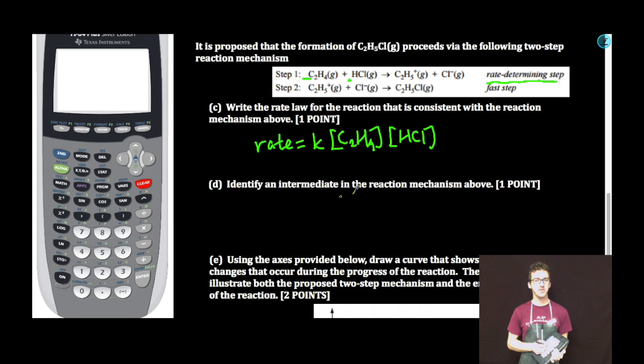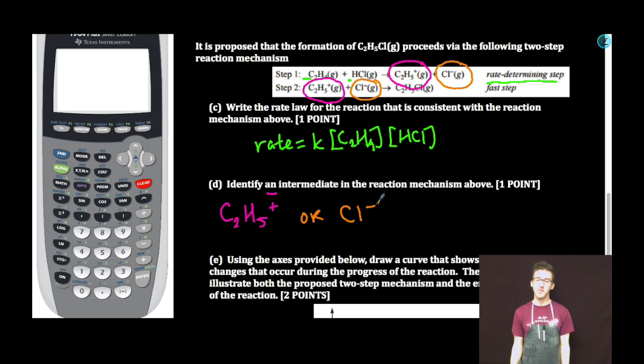Part D. Identify an intermediate in the reaction mechanism above. As I study my mechanism, recall that an intermediate is produced in an early step and consumed in a later step. So we actually have two possible answers here. It says identify an intermediate, which implies just identifying one. I've included both of them here in my answer, but recognize that if you're only asked for one, play it safe and throw down just the one answer that you know for sure could be an intermediate.